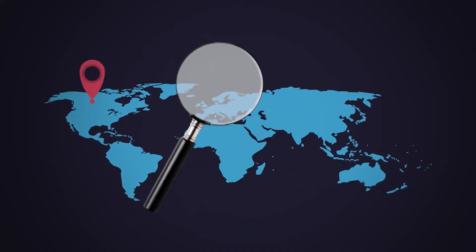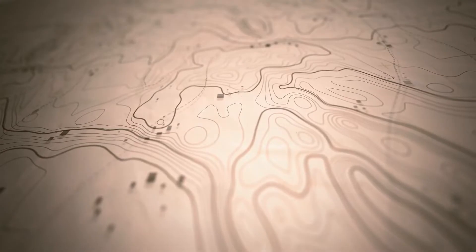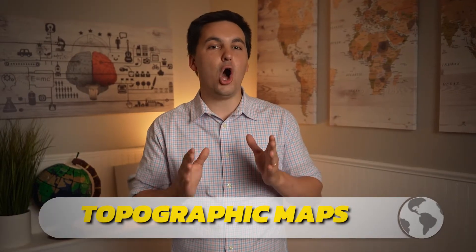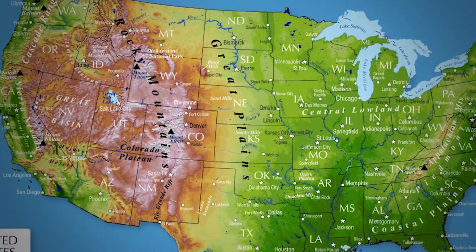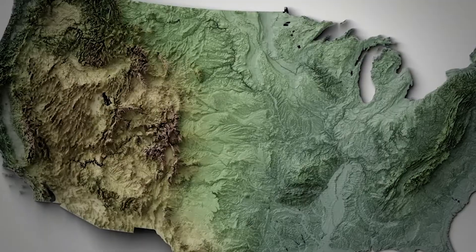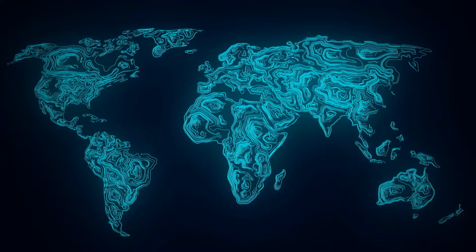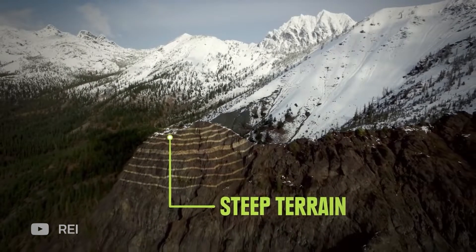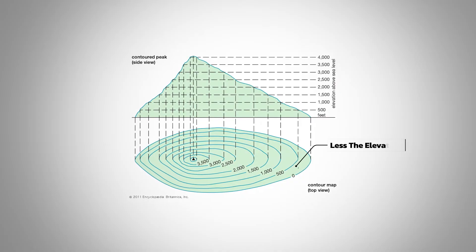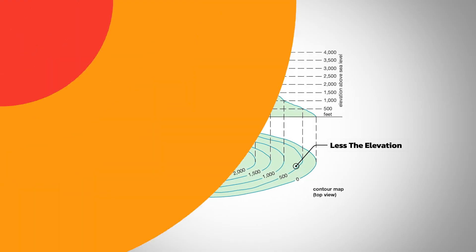Physical maps provide information on the physical geography and the topography of a region. There are also topographic maps, which use contour lines to display the terrain and elevation changes in an area. The closer the lines are together, the steeper the terrain is, while more space between the lines means less elevation change.